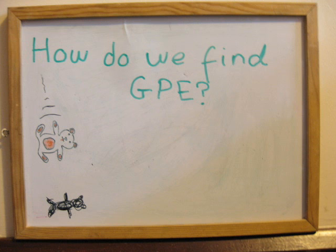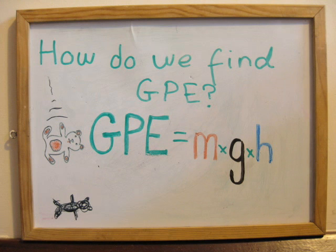How do we find GPE? Well, it is calculated from the following formula: GPE equals M times G times H. M is the mass of the object, G is the acceleration due to the Earth's gravitational field, and H is the height at which the object is placed.